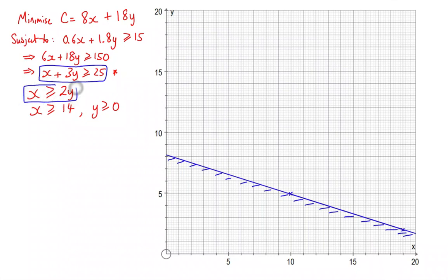Let's go to the next one. x is greater than or equal to 2y. We know that this is going to go through the origin. When x is 20, y is going to be 10. So we're going to draw a line going through those two points, like so.